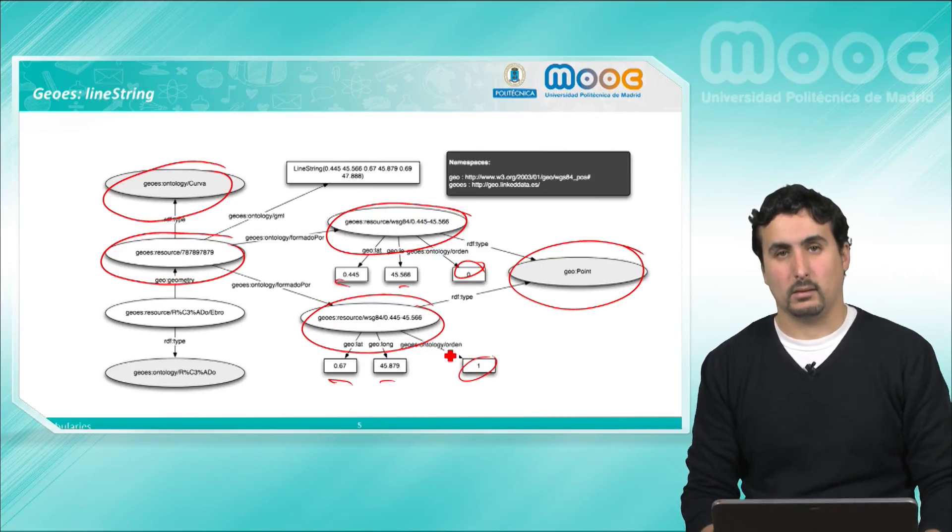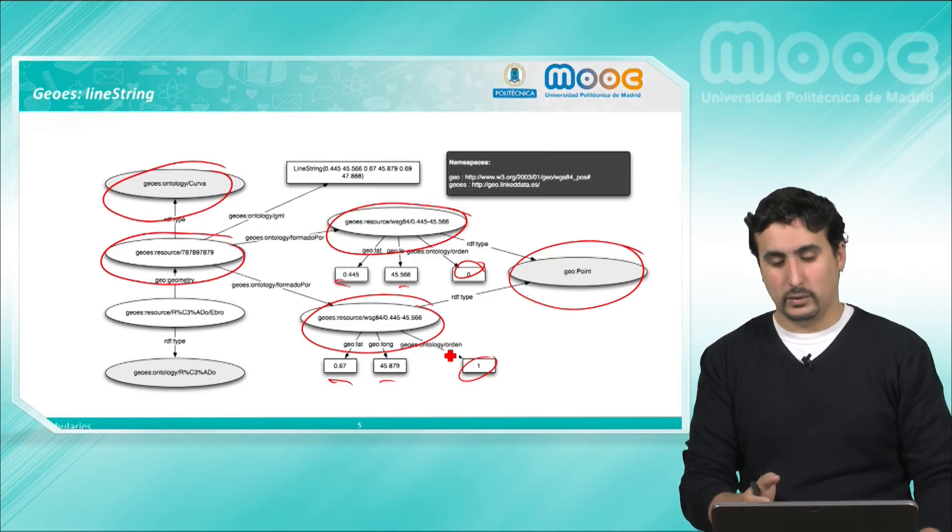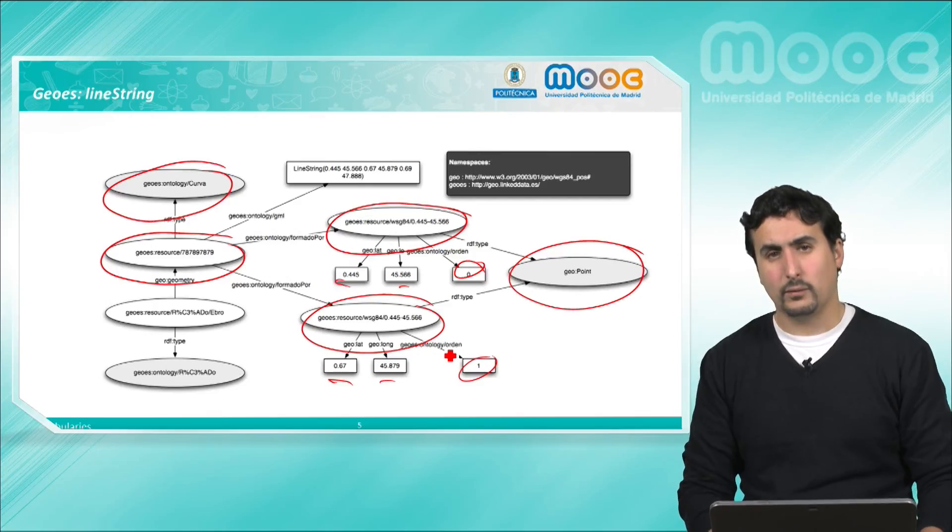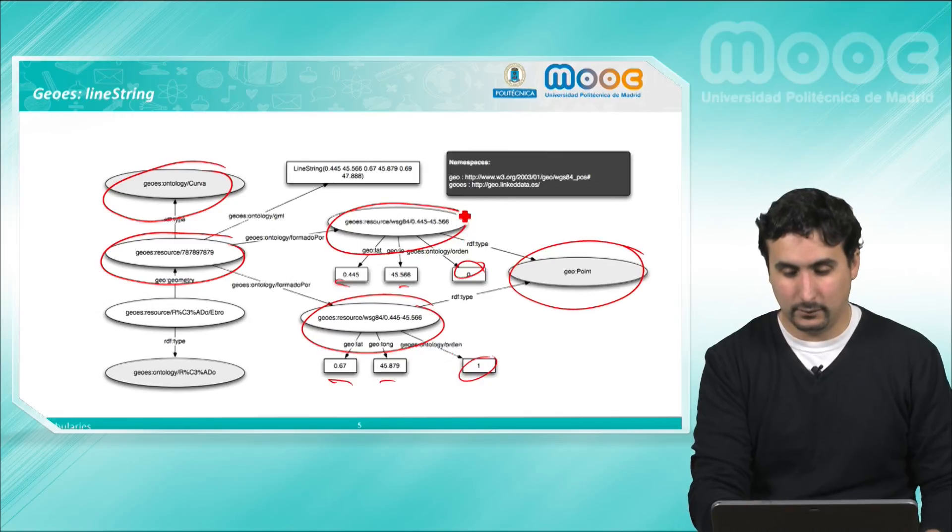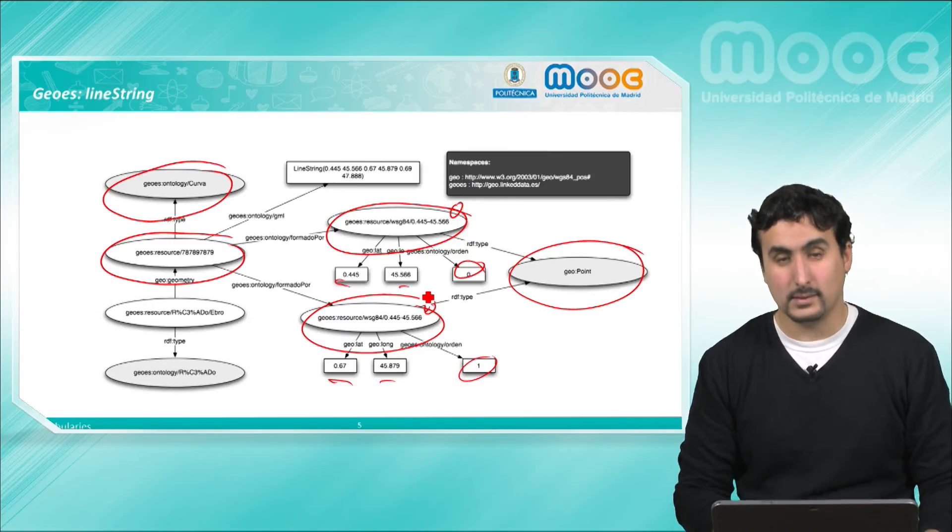So we will have, for example in our map when we're using this, a curve representing a line from this first point to this second point.